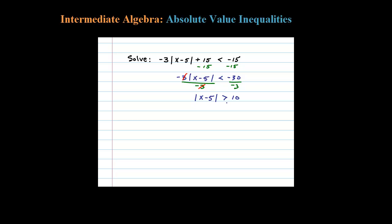Now I have an absolute value inequality, which is case 3 of the theorem in the principal notes. For that to hold, the argument X minus 5 has to be less than negative 10, or X minus 5 has to be greater than 10.